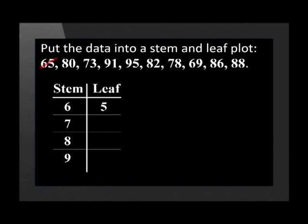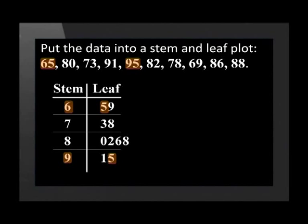The second number is 80, so we put a 0 in the 80 row and cross out 80. Next we have 73, 91, 95, 82, 78, 69, 86, and our last number is 88. The stem and leaf plot has made it easier to order the data. We can now see that the data ranges from 65 to 95.